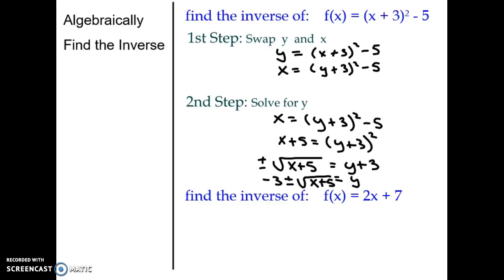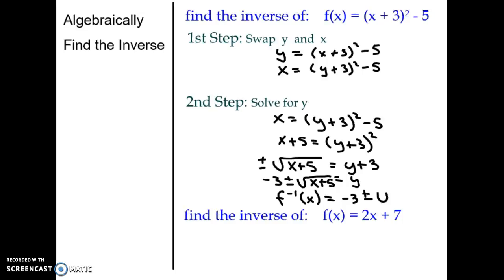But the final answer, let's put it in inverse notation, is this. The inverse of x is equal to negative 3 plus or minus the square root of x plus 5.